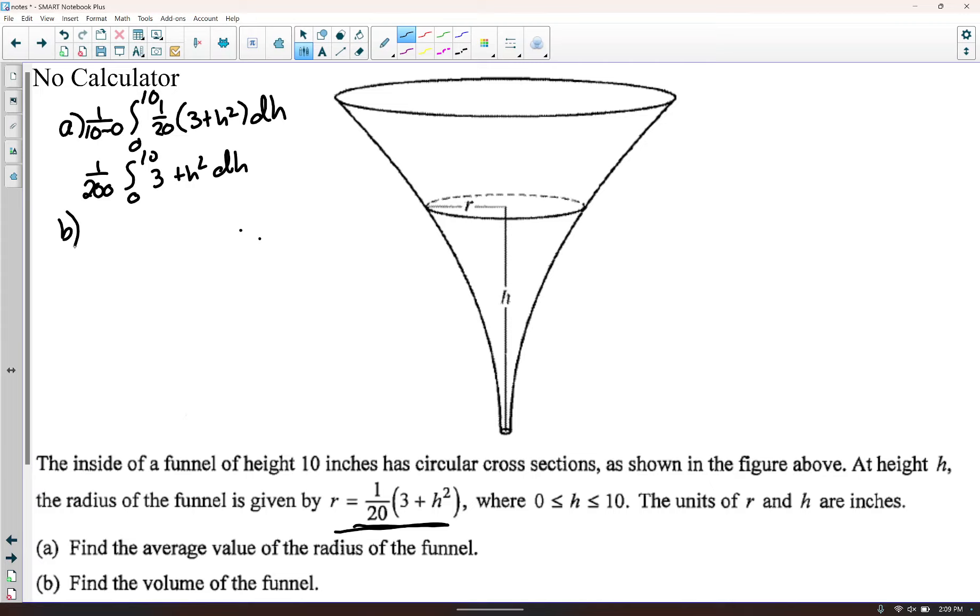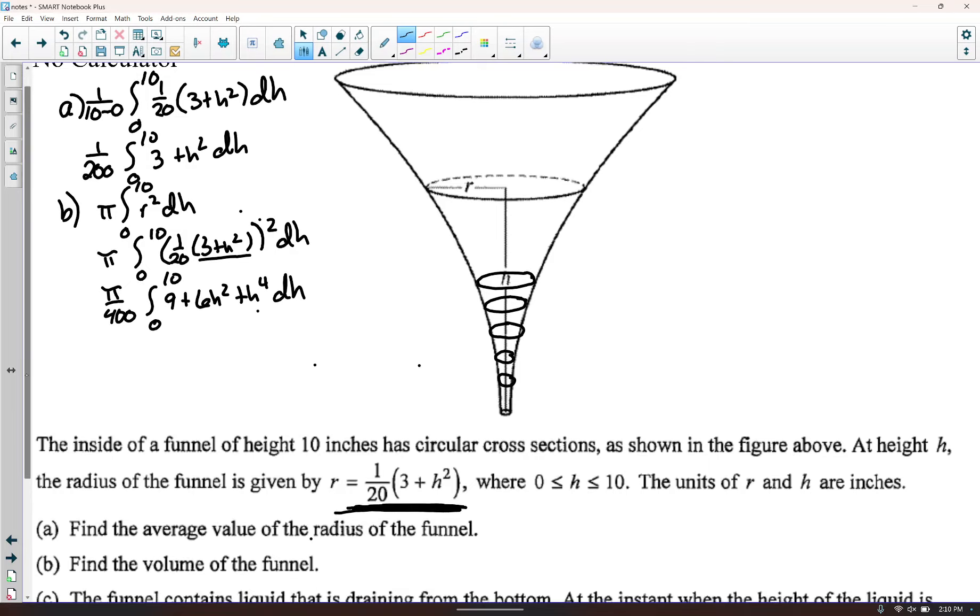Part B, find the volume of the funnel. Well all of these are, all these cross-sections are circles. So if we add up all the circles, add up all the area of the circles, then we end up with volume. So now since all of these are circles, we're going to go from 0 to 10 of pi r squared dh. And the reason it's dh is because the radius is in terms of h. So we have pi integral from 0 to 10 of 1 20th, 3 plus h squared, and then all of that squared, dh. So we could have like pi over 400, because 20 squared is 400, 0 to 10, and then we can FOIL this right here, which is 9 plus 6h squared plus h to the 4th dh, and we end up with a polynomial. I assume you can do the integral of a polynomial, and I'll show the answer in the end anyway.